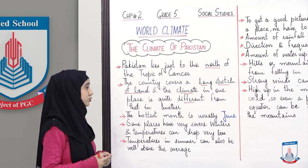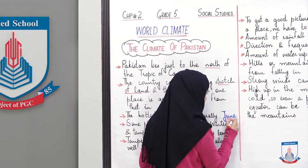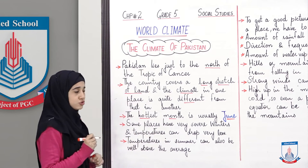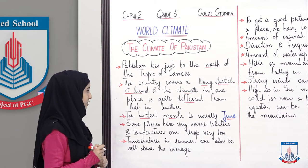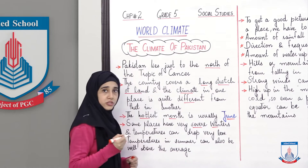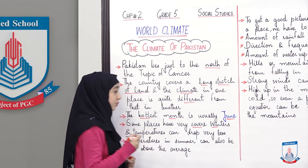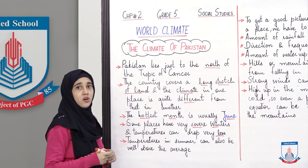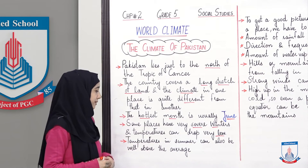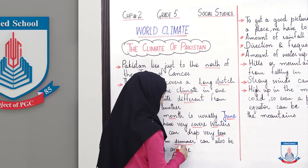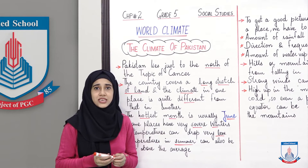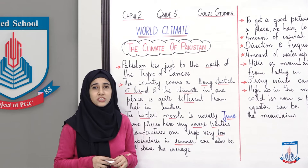The hottest month is usually June. Some places have very severe winters and temperatures can drop very low — like in our northern areas, where temperatures can drop to minus degrees. Temperatures in summer can also be well above average, going up to 38 or 40 degrees in some areas.